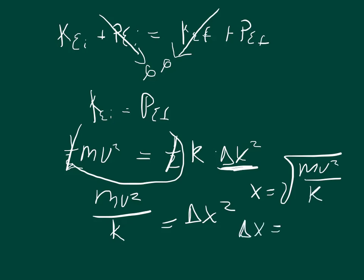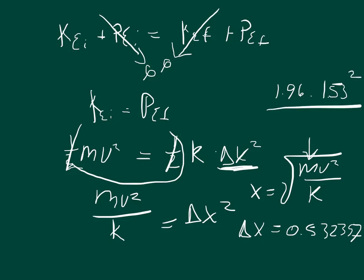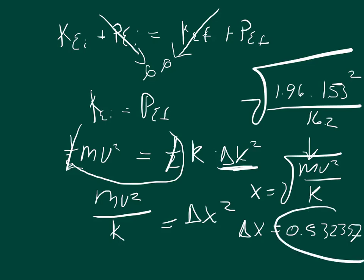The change in X equals 0.53239 meters. When you plug in the values: the mass is 1.96 kilograms (1.95 for the block plus 0.01 for the bullet), the velocity was 1.53 meters per second, so you take 1.53 squared and divide by the force constant of 16.2 newtons per meter, then take the square root of all that, and you get 0.53239 meters for the spring compression.